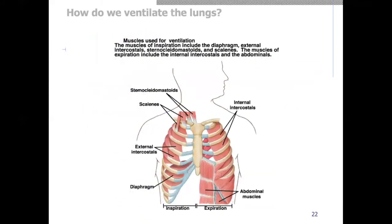Looking at the muscles of inspiration: primarily the diaphragm, but also the external intercostal muscles, as well as scalene muscles and the sternocleidomastoid located in the neck. To exhale, we can simply relax these muscles. However, for more forceful exhalation, we contract the internal intercostal muscles, as well as our abdominal muscles — including the external and internal obliques and the rectus abdominis. Typically though, it is just us relaxing the inspiration muscles in order to exhale.